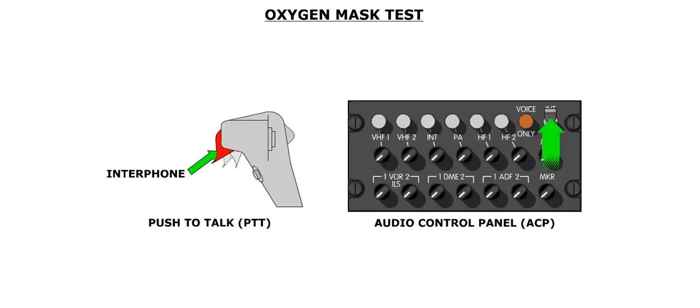The push to talk selector on the control wheel should be set to the forward interphone position, and interphone reception on the audio control panel should be selected as well.